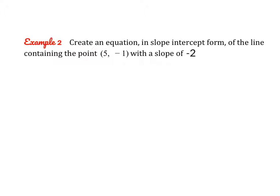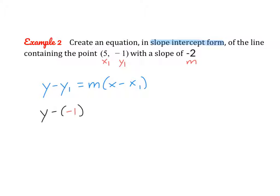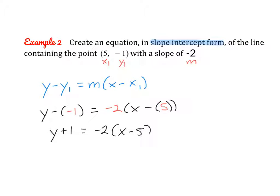Let's try one more together. Write an equation in slope-intercept form of the line containing the point (5, negative 1) with a slope of negative 2. Again, we can't use slope-intercept form because we don't know the y-intercept, but we can use point-slope form: y minus y1 equals m times x minus x1. Labeling our values: x1 = 5, y1 = negative 1, m = negative 2. Substituting: y minus (negative 1) equals negative 2 times (x minus 5). The two negatives become a positive, so we rewrite that before continuing.